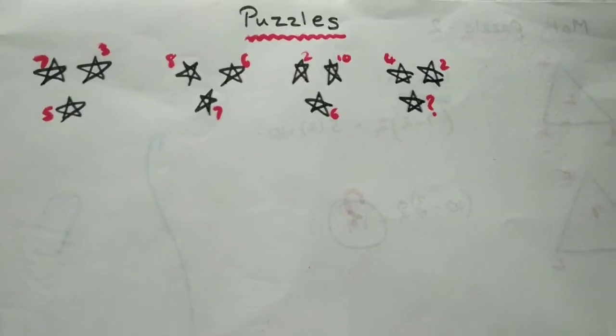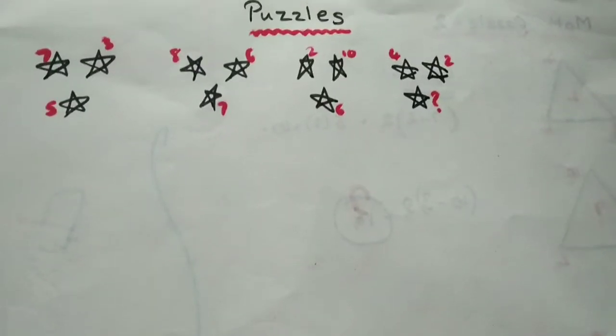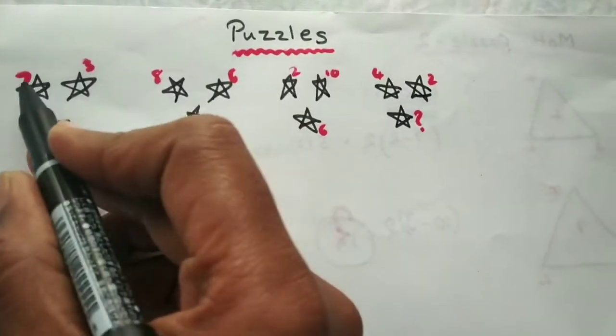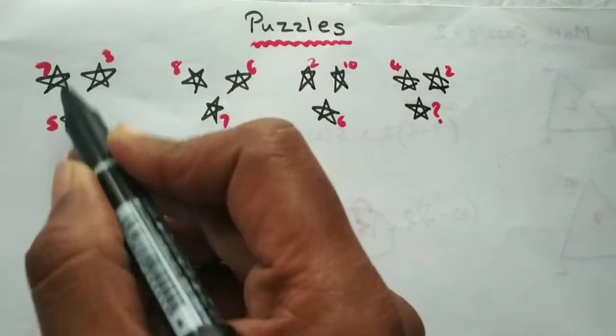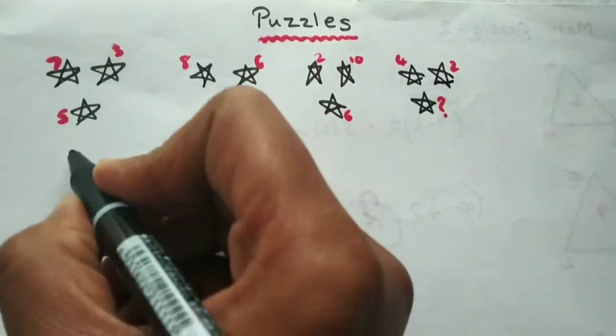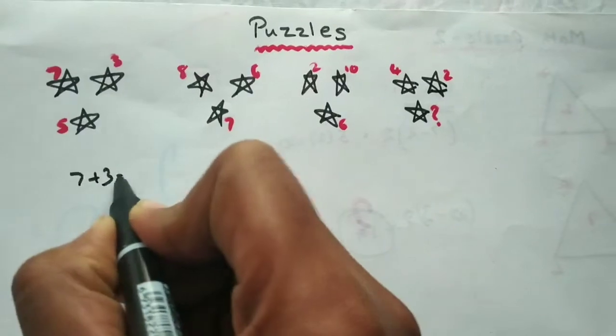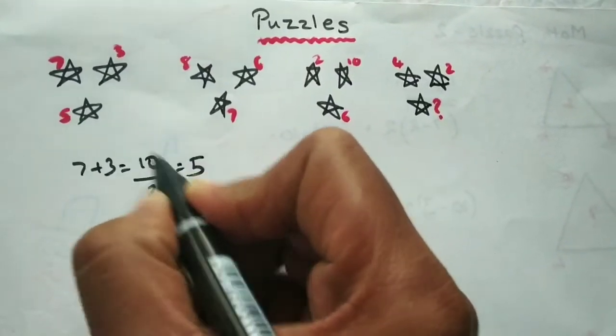Hi friends, very easy puzzle I gave you today. What is the answer for these puzzles? The given 7 plus 3 is 10. Divide 10 by 2, then you are going to get 5.